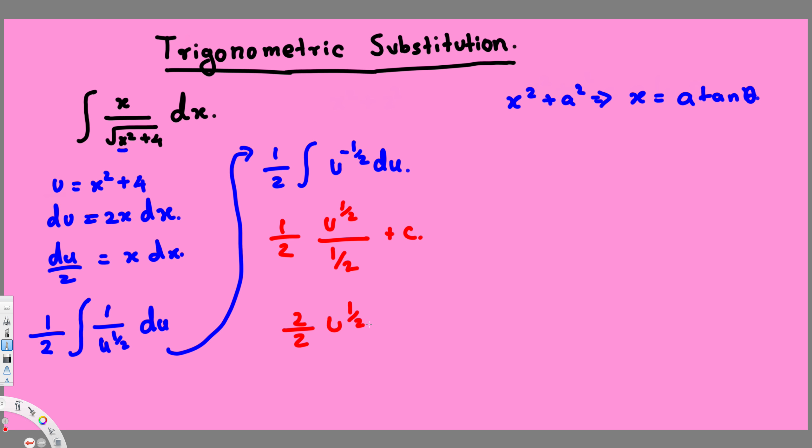u power half plus constant. So this 2 over 2 cancels. Finally, we end up with u power half. Now u is this one, so we have to do the back substitution. We took u as this value.